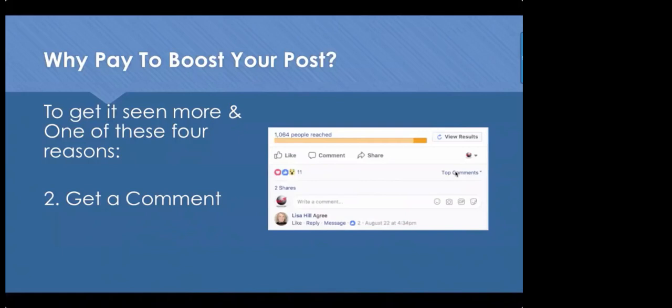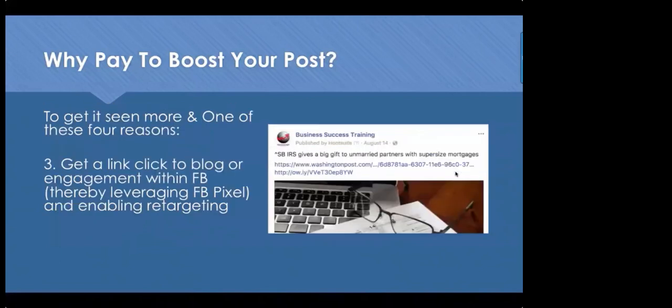In one example, 1,064 people were reached — you can see organic reach on the left and paid reach on the right. By getting the wheels going for a few dollars, the post caught legs: 11 people liked, reacted with love or wow, two people shared it, and we got comments. If I wanted to message Lisa Hill back privately and say 'hey, tell me why you feel this way,' we can open a conversation. Or send a message like 'hey, I saw you liked my post — how have your first few weeks of fall been?'